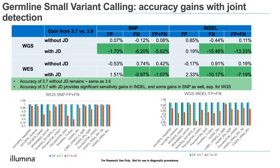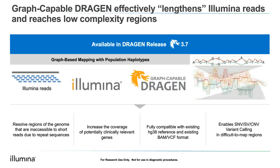To summarize what the graph genome does: it resolves regions of the genome that were previously not accessible from Illumina reads due to repeat sequences or difficult mapping, and increases coverage into relevant genes that were hard to call before. We are compatible today with HG38 and will make the same graph genome available for GRCh37. We have demonstrated improved performance for small variants and are now looking into the impact on structural variants.